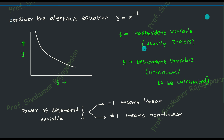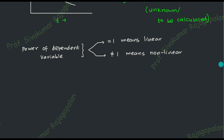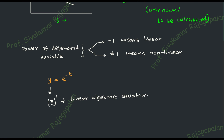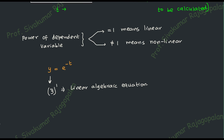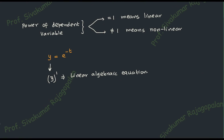Since there are infinitely many combinations, we focus our attention on one special variety: linear differential equations. If we choose only linear combinations, the result is known as a linear differential equation. Here x is the independent variable (a known quantity) and y is the dependent variable (the unknown). Both y and y prime are unknown quantities, and for linearity, the power of the unknown must be exactly one.